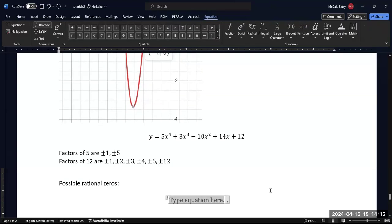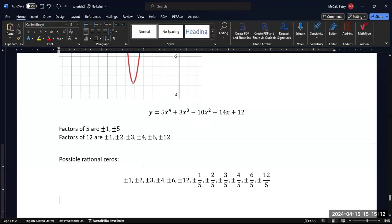So the possible rational zeros are, well, we have this complete set from before. All of these guys divided by 1 are also possible, but now also all of the ones divided by 5. So we could have plus and minus 1 over 5, plus and minus 2 over 5, plus and minus 3 over 5, plus and minus 4 over 5, and plus and minus 6 over 5, and plus and minus 12 over 5. So these are now all the possible rational zeros.